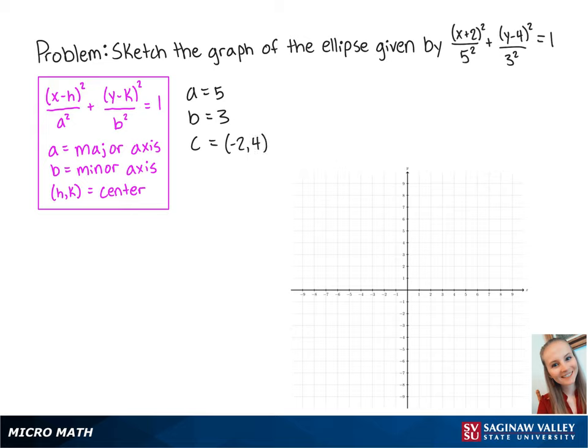Now we will plot the relevant points. The center is at (-2, 4), and the major axis points will be 5 to the left and 5 to the right of the center. So the first point is at (-7, 4), and the second point is at (3, 4).